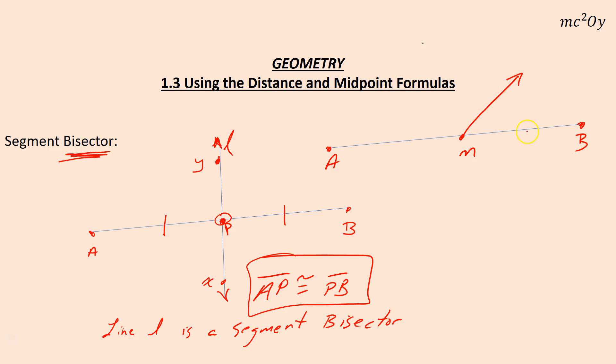A ray could bisect a segment. Okay, AM is congruent to MB. A line can bisect a segment. So if we continue that out there and call this line L just like we did over here. Anything can bisect the segment and cut it in half. Anything, a ray or a point or a line there.